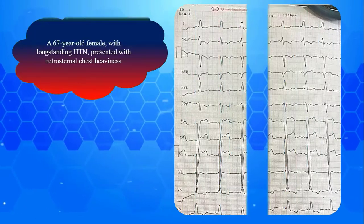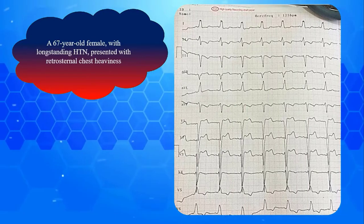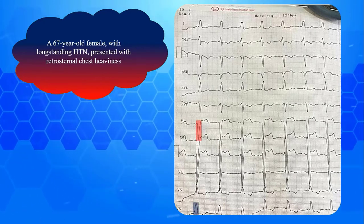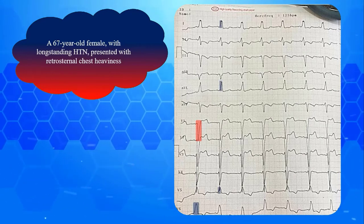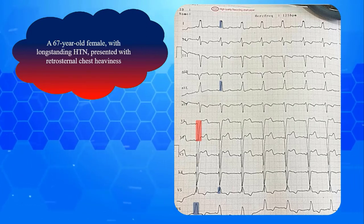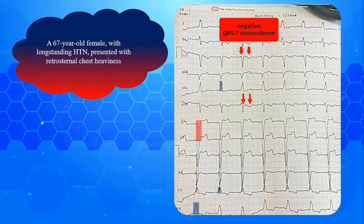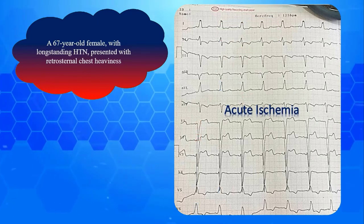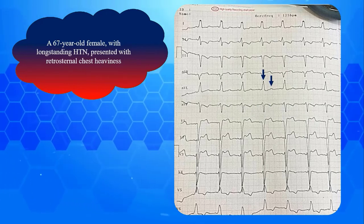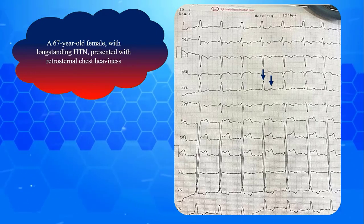Let me show you an example. This EKG belongs to a 67-year-old male with long-standing hypertension presented with retrosternal chest heaviness. Wide QRS complexes with deep S in V1, slurred R in V6, absent septal Q in lateral leads, and prolonged R peak time in V5, D1, and AVL establish LBBB. Secondary STT changes are present in precordial leads. Looking carefully at the strip, we recognize negative QRS-T concordance in D2 and AVF, which establishes acute ischemia as the most possible cause of chest heaviness. On the other hand, there is positive QRS-T concordance in AVL, which is normal in the context of LBBB and has no clinical significance.